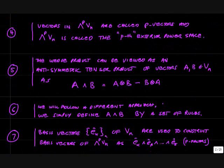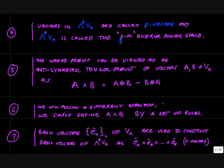The vectors in the p exterior power space are called p-vectors, and wedge-to-the-p of Vn is called the p exterior power space of the linear space Vn.